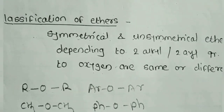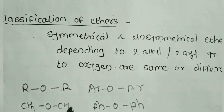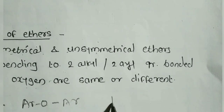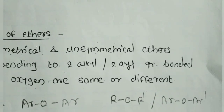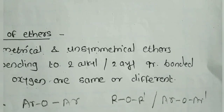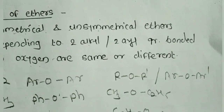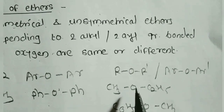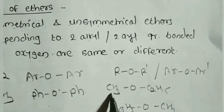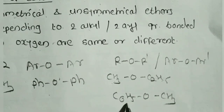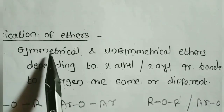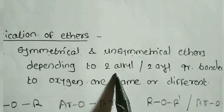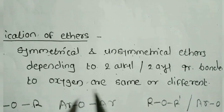The second type is unsymmetrical ether, also called mixed ether: R–O–R' or Ar–O–Ar'. For example, CH3–O–C2H5, where oxygen is bonded to two different alkyl groups (CH3 and C2H5). Another example: C6H5–O–CH3, where oxygen is attached to one benzene ring and one CH3 group. This is the classification of ethers into symmetrical and unsymmetrical, depending on whether the two groups bonded to oxygen are same or different.